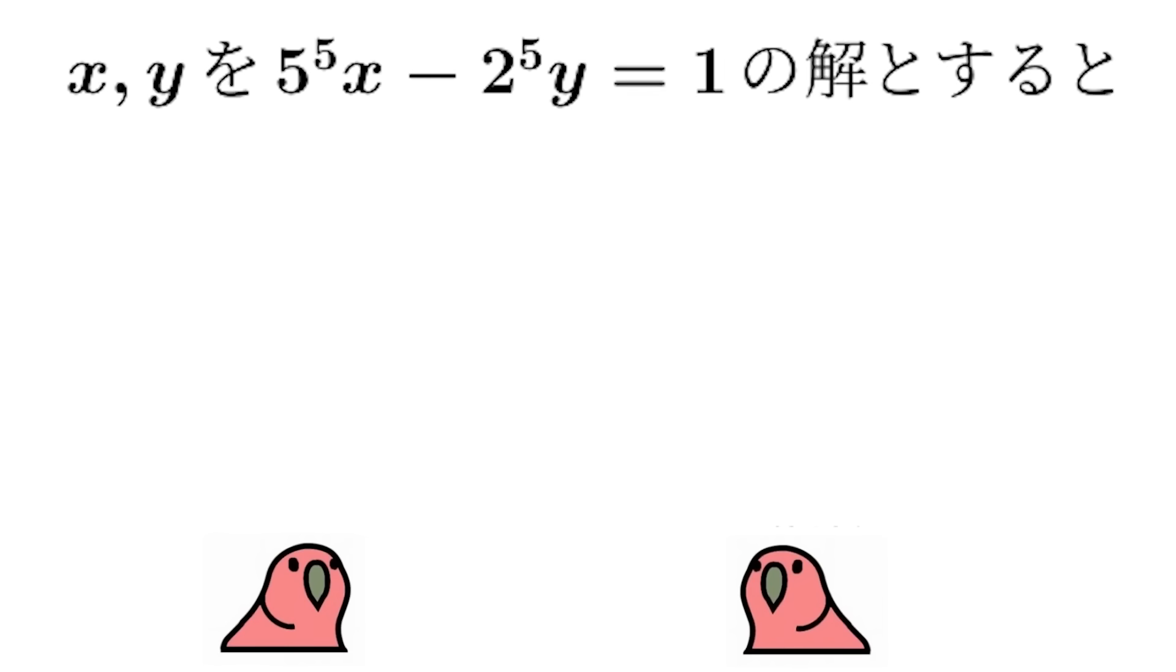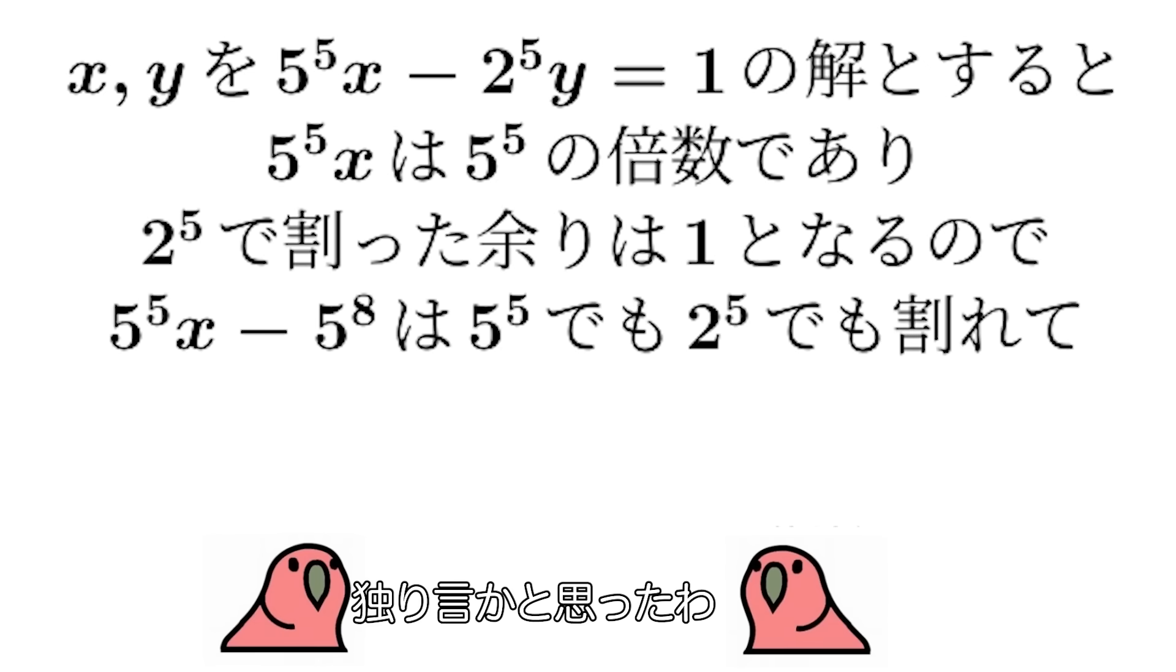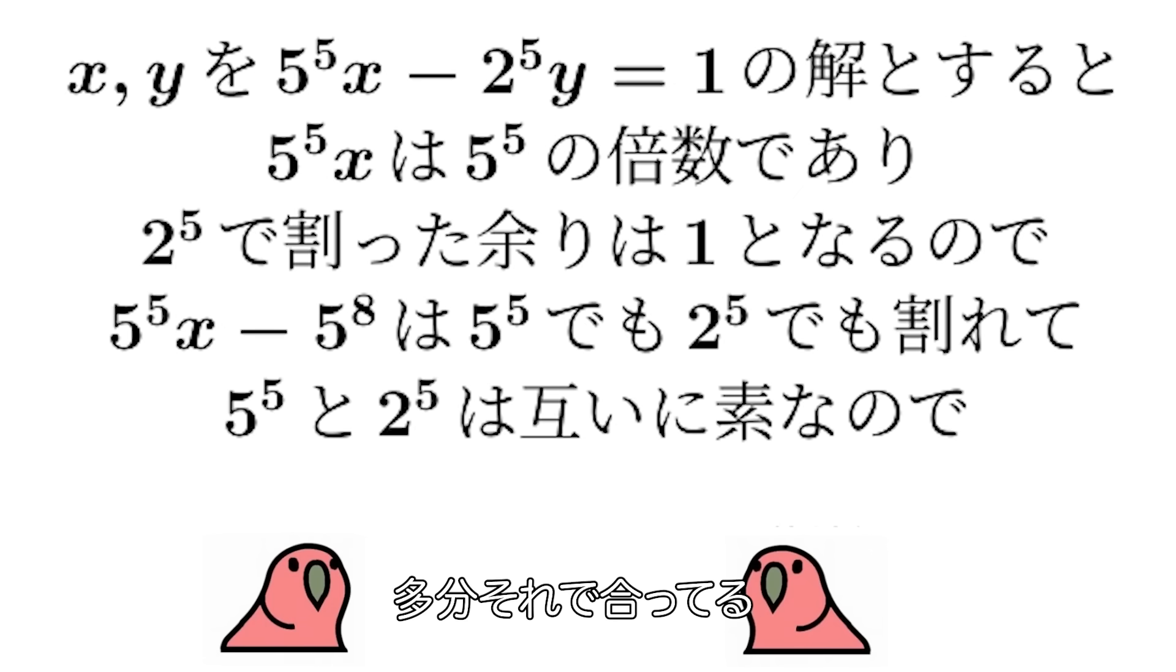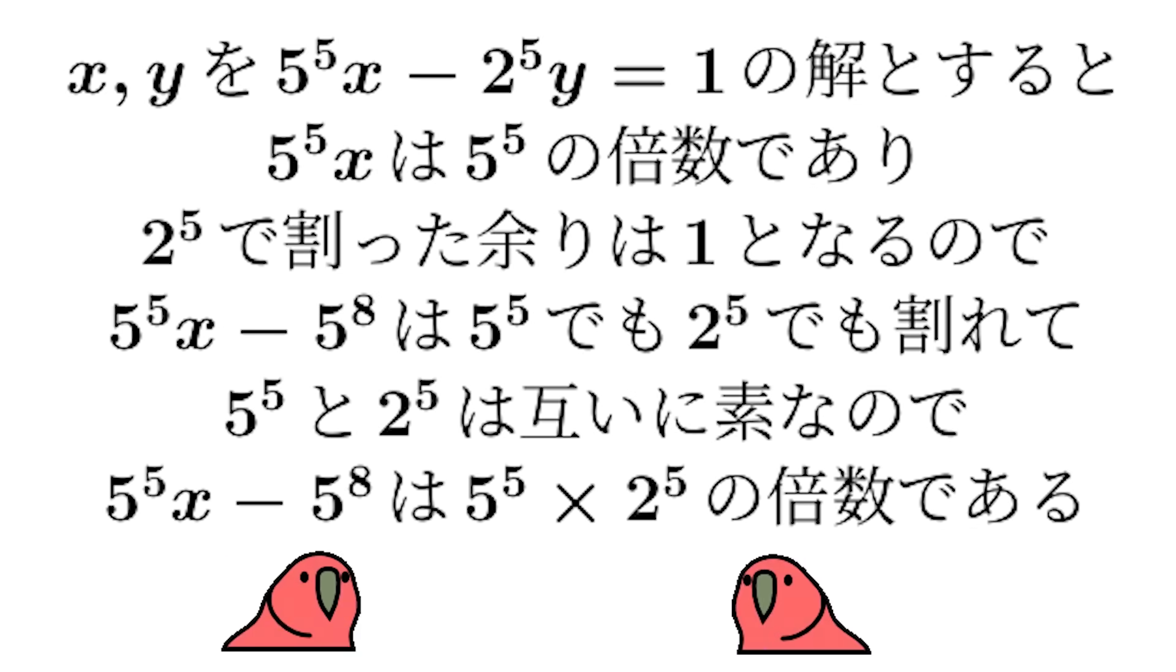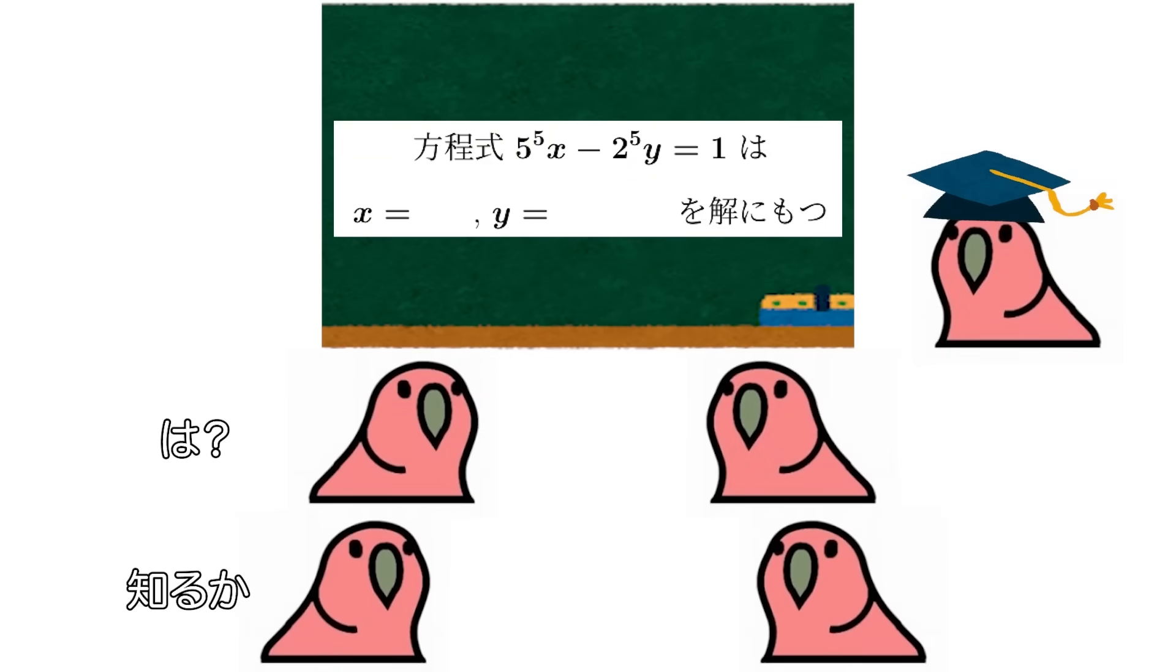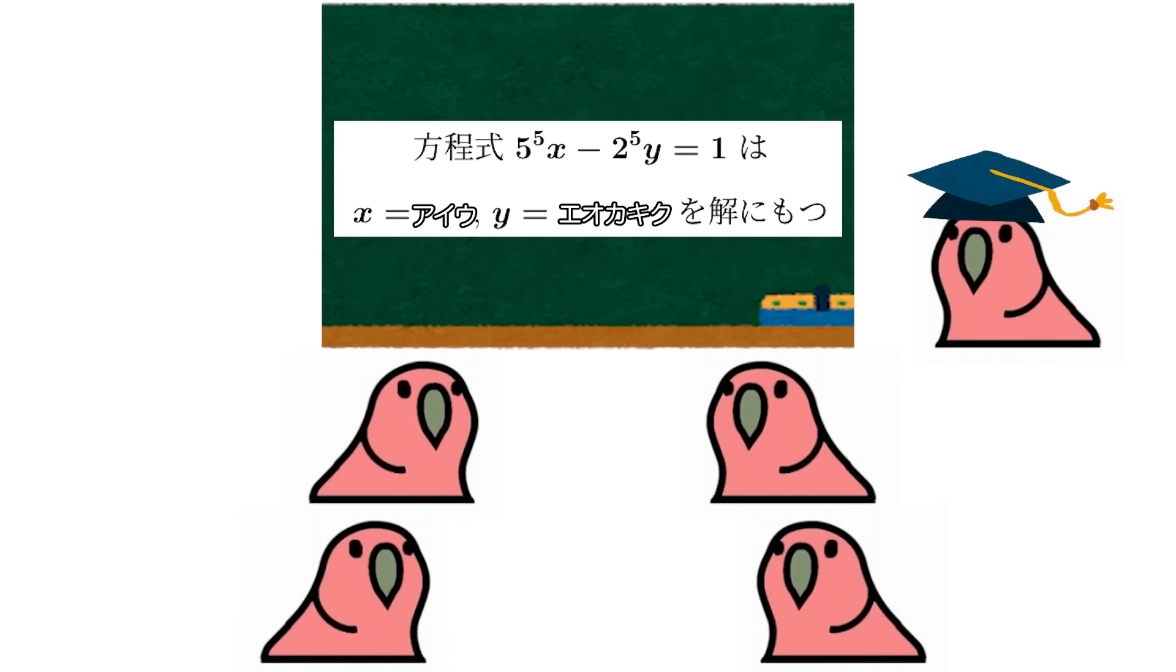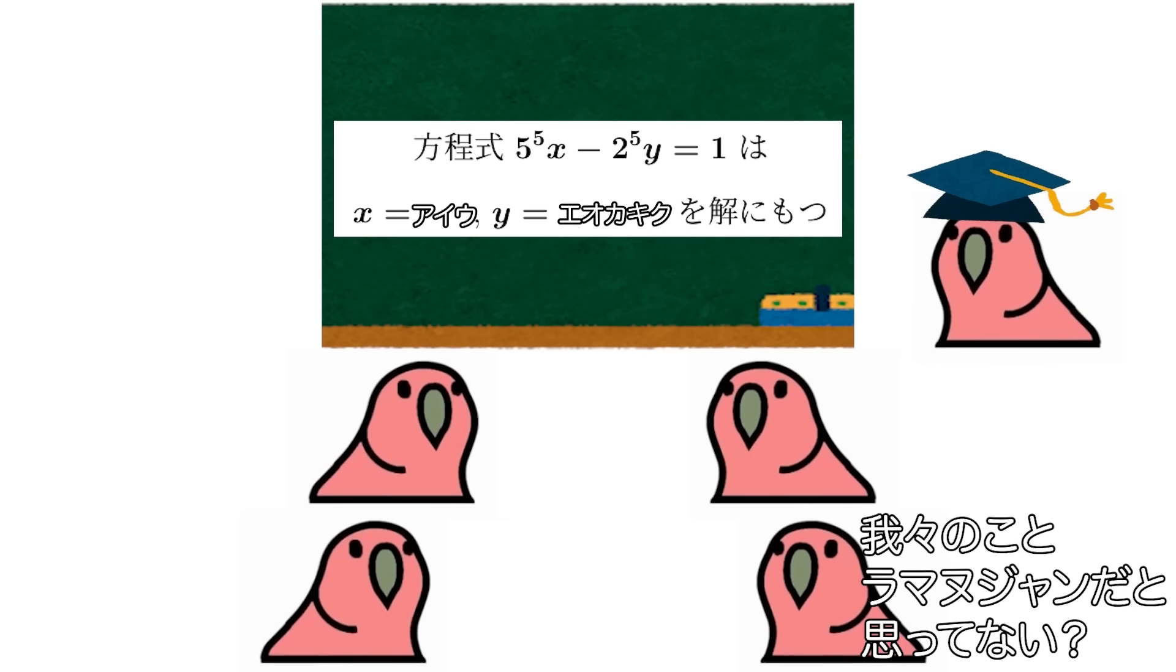X, Y wo kono hōteishiki no kai to suru to, 5^5 x wa 5^5 no baisū de ari, 2^5 de watta amari wa 1 to naru node. 5^5 x - 5^8 wa 5^5 demo 2^5 demo warete, 5^5 to 2^5 wa tagai ni sona node. Ganagojo to 2^5 wa tagai ni so nano de. Sate kai wa dōnari masu ka? Ha, shiruka. Nanayatetaka wa suratawa, yudu mashi shitoria azu to kauze. Dakara nakoto Ramanujan wa tumata nai?